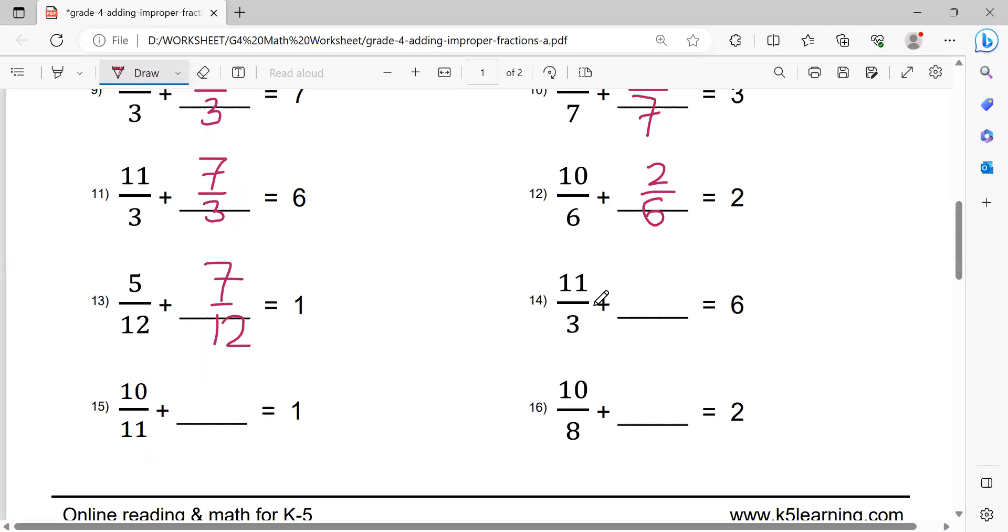Number 14. 3 times 6 equals 18. 18 minus 11 equals 7.